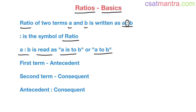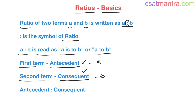The first term, A, is called as antecedent. The second term, B, is called as consequent. These two names are important. Tomorrow UPSC may ask what is the consequent of this ratio, so please remember these two names. Consequent comes later, my friends.